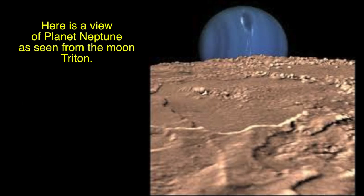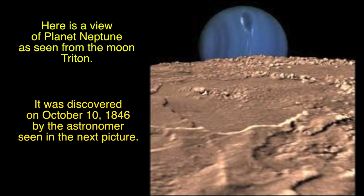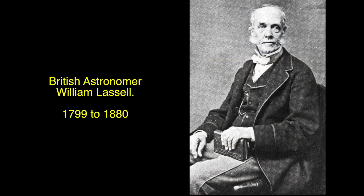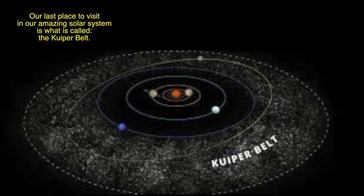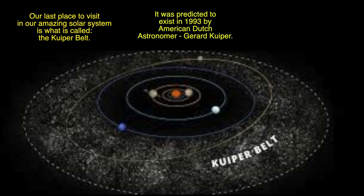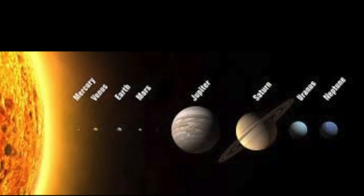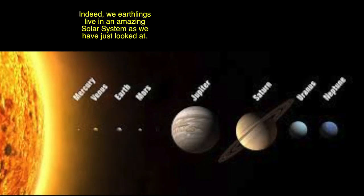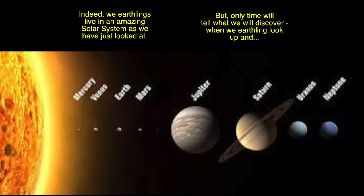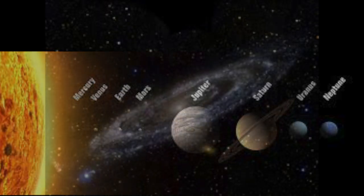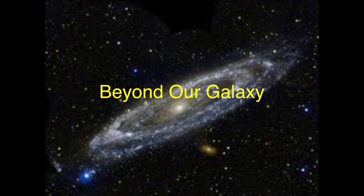Here is a view of planet Neptune as seen from the moon Triton, discovered on October 10, 1846 by British astronomer William Lassell, 1799–1880. Our last place to visit in our amazing solar system is what is called the Kuiper Belt, predicted to exist in 1993 by American astronomer Gerard Kuiper and named in his honor. Things like dwarf planet Pluto, asteroids, and other debris orbit around our sun here. Indeed, we Earthlings live in the amazing solar system — and only time will tell when we look up and discover what lies beyond our galaxy!